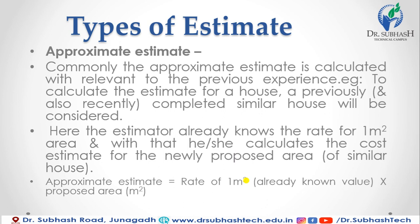The approximate estimate is calculated with reference to previous experience. For example, a previously and recently completed similar house is considered. The estimator already knows the rate per one meter square area and uses it to calculate the cost for the newly proposed area. Approximate estimate equals rate of one meter square multiplied by proposed area.